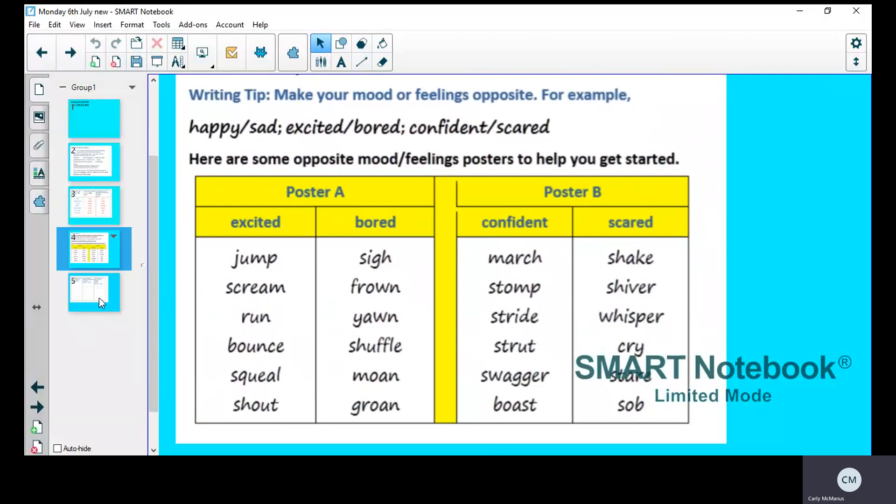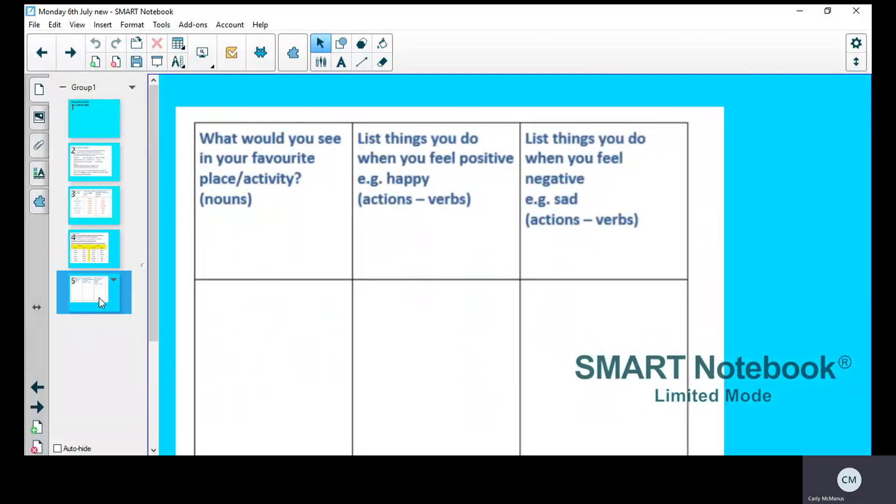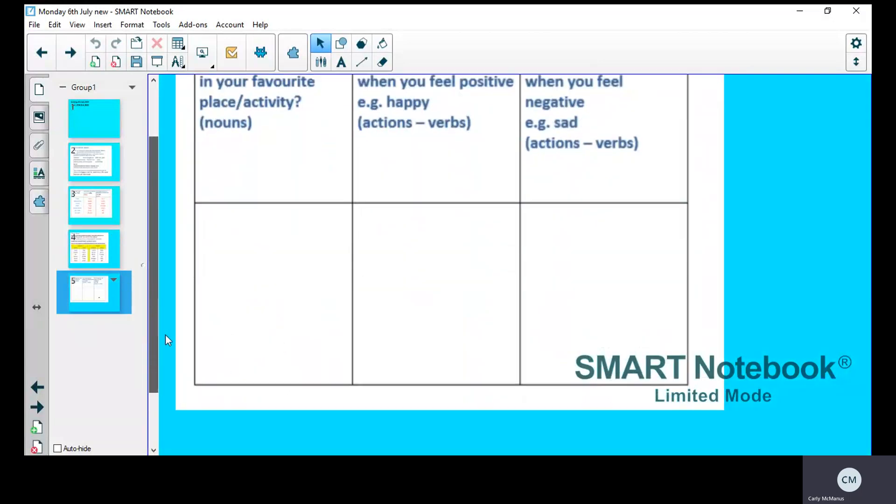But I want you to stick to happy and sad, because I think you'll find that easier. So on your purple mash, you will write down eight nouns.